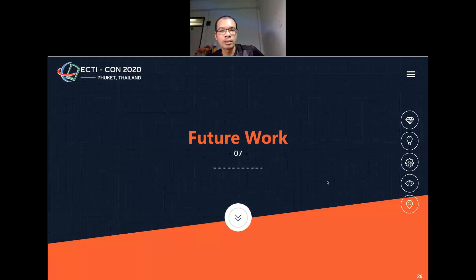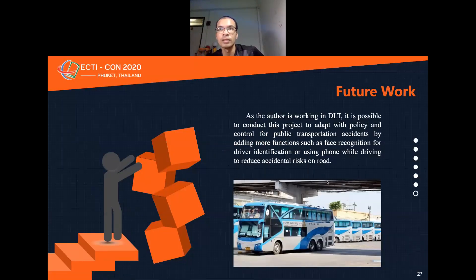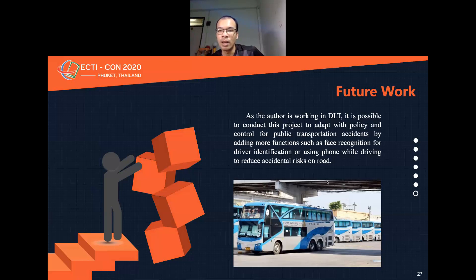For Future Work: As the author works in the Department of Land Transport, it is possible to adapt this project with policy and control for public transport accident prevention, by adding more functions such as face recognition for driver identification, or detecting phone use while driving, to reduce accident risk on the road.